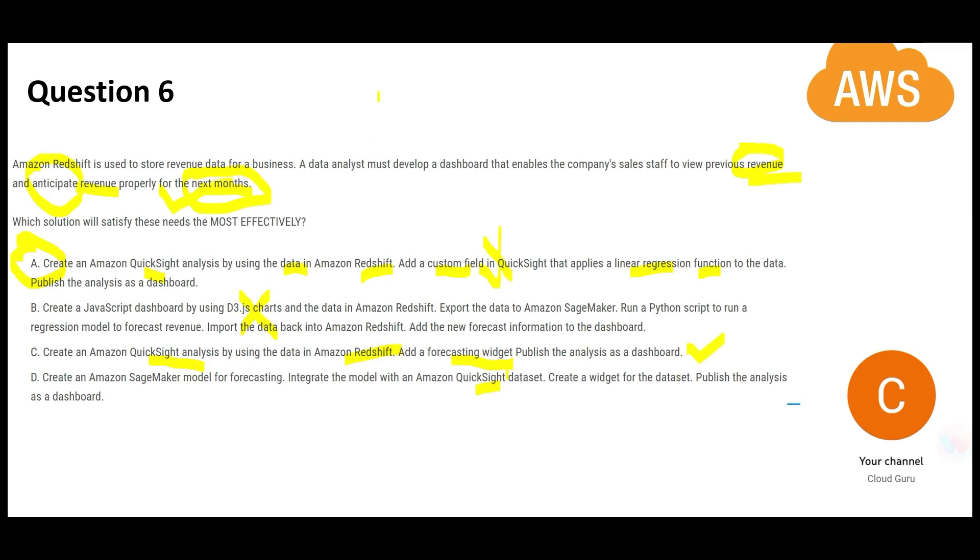Let us look at D. D is telling you to use SageMaker model and integrate that model with QuickSight, then create a widget for the dataset. Here you are using two services instead of one, so it is not most effective. Second problem: if you have a knife, don't pull your gun. SageMaker is a gun—in QuickSight you already have forecasting widgets, that is your knife. If QuickSight already has it, why are you pulling your gun here? So D is wrong.